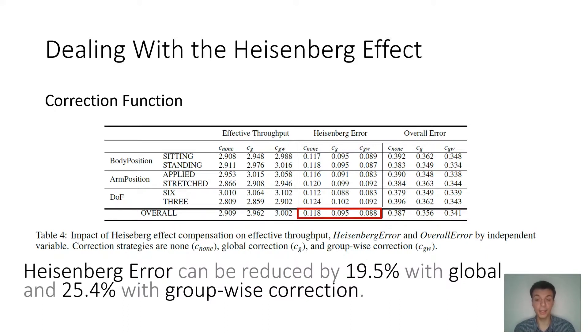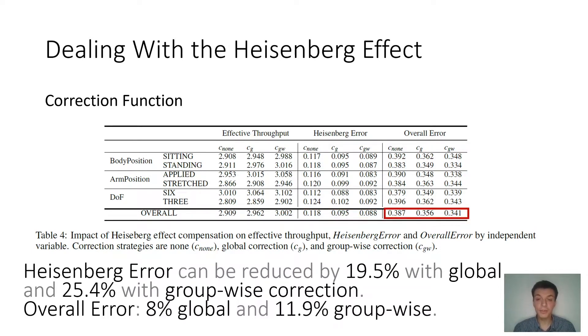The Heisenberg error could be reduced by 19.5%. And if we have information on the condition, so the body position, arm position, and degrees of freedom, we can even reduce it by 25.4%. And getting this information is not that hard. Body position is just the HMD position, we can derive that from the height of the HMD position. Arm posture can be derived from the relative position of the controller to the HMD, and degrees of freedom are given by the platform. This way, we can even correct the overall error by either 8% with the global correction or almost 12% with the groupwise correction.